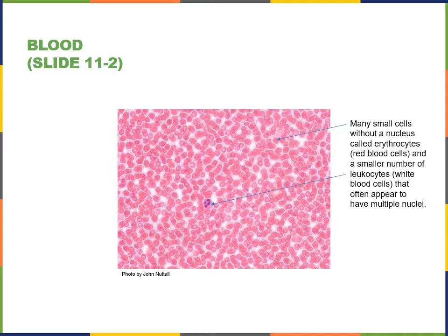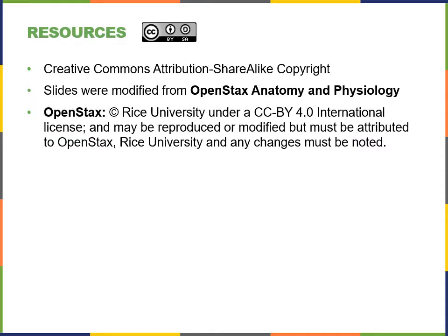Here is a light micrograph showing blood, where the majority of the cells — small red cells — are erythrocytes. The one large cell in the center with a multi-lobed nucleus is a type of leukocyte called a neutrophil, which is the most common type of leukocyte found in a blood smear.